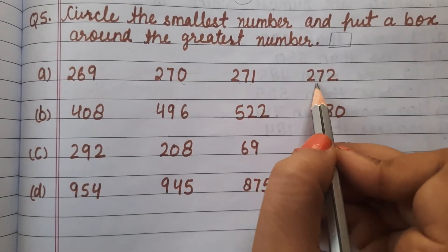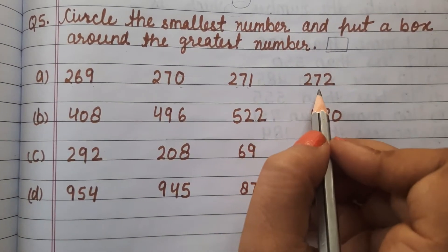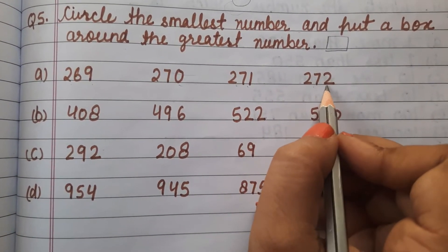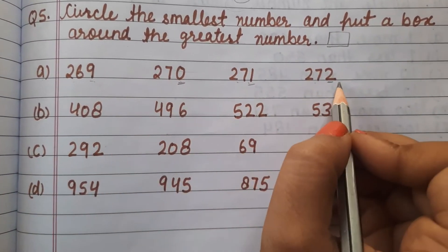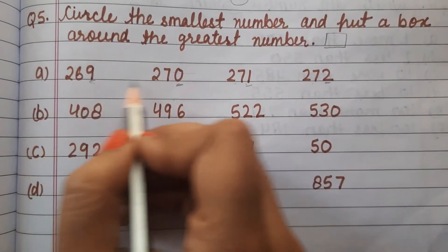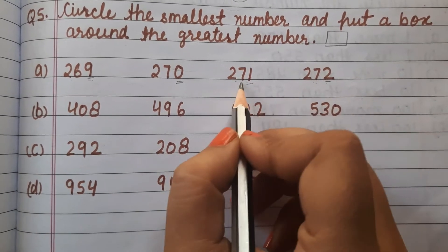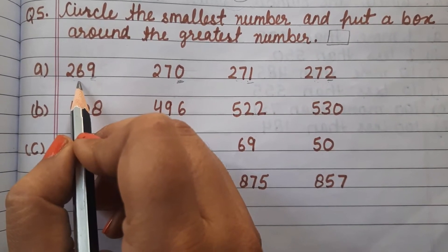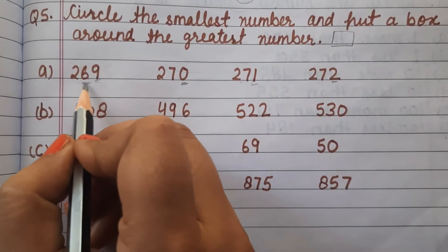In part (a) we have 269, 270, 271, and 272. Which is the smallest? We compare the tens and ones. The smallest number here is 269.